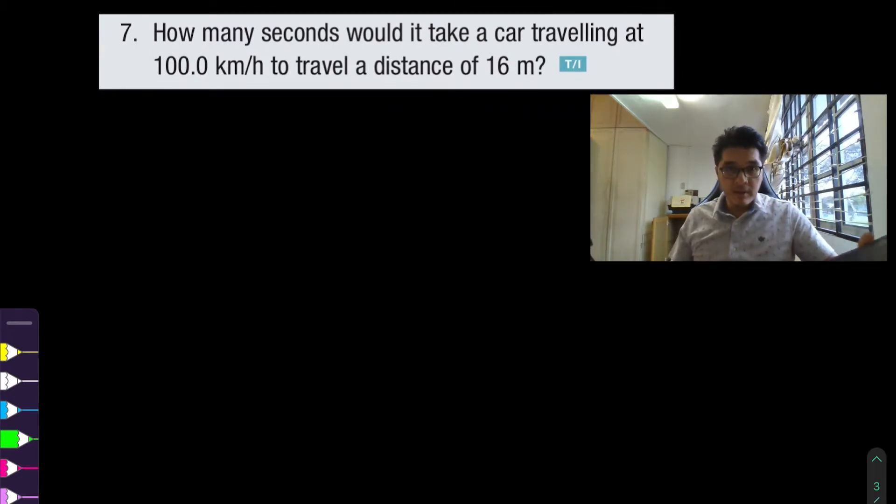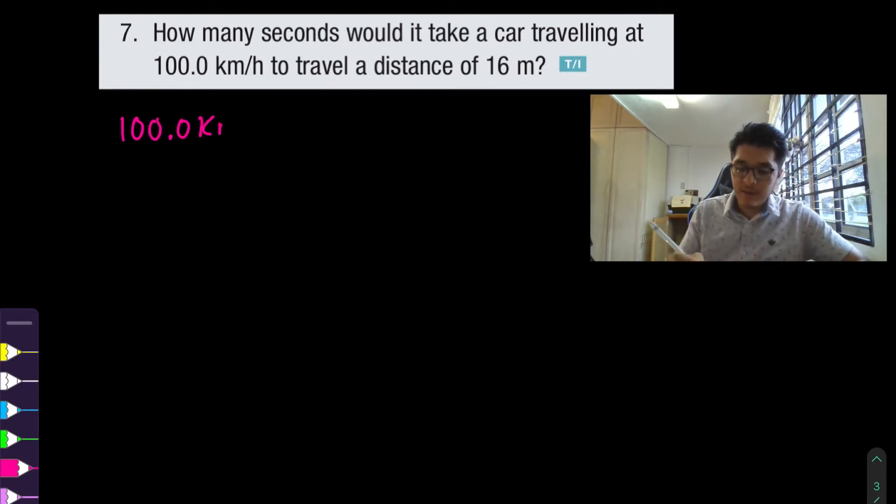Okay make sure you hit like that way you promote this video a bit more and other students can appreciate that. So for question number seven they're asking us how many seconds will it take a car traveling at 100 kilometers per hour to travel a distance of 16 meters. Now right away I noticed that before what the question was even asking me I have units that are not SI units which are the accepted ones. So right away before I get too excited to answer this question we should first convert to SI units which is kilometers per hour into meters per second.